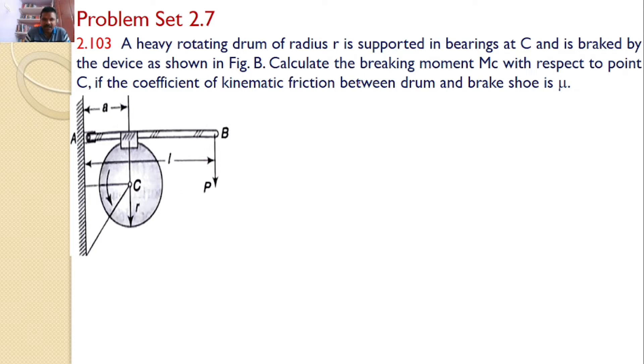If the coefficient of kinematic friction between the drum and the brake shoe is mu, that means there is a rotating drum which is rotating in this direction. Now, we would like to stop this drum by using a setup like brake by applying a force P.